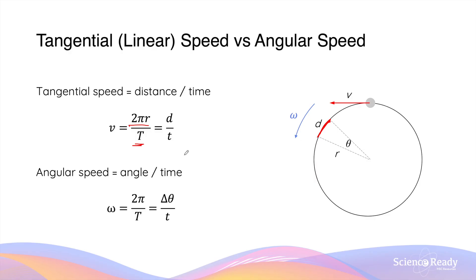The other type of speed is angular speed, ω. This is calculated by taking the angle completed by the object around the centre divided by the time taken. For an entire revolution, the angle is 2π radians, equivalent to 360 degrees. So we take 2π divided by the period to calculate omega, the angular speed, in radians per second.